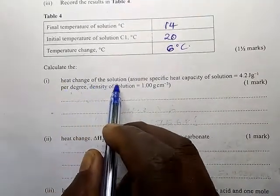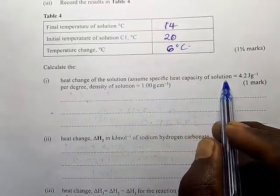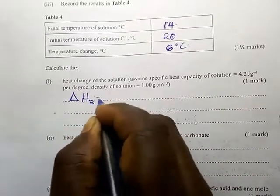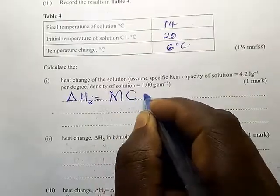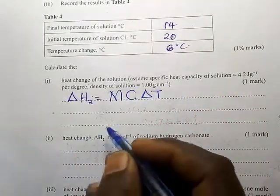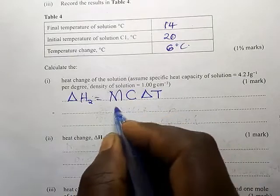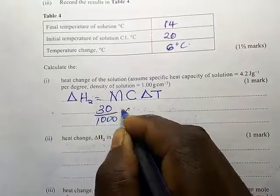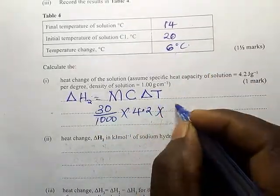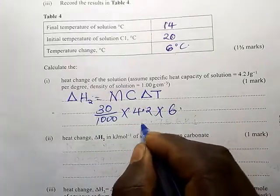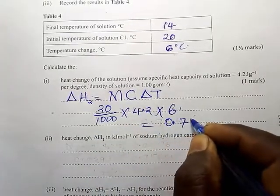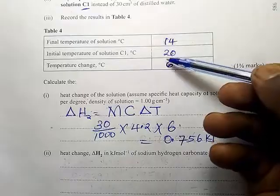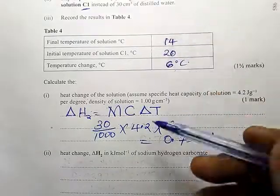Calculate the heat change of the solution, assuming the specific heat capacity of the solution is 4.2. We know heat change equals mass times specific heat capacity times temperature change. The volume is 30 cm³, so mass is 30 g; divide by 1000 times 4.2 times temperature change of 6. This gives us 0.756 kilojoules. The reaction is endothermic.